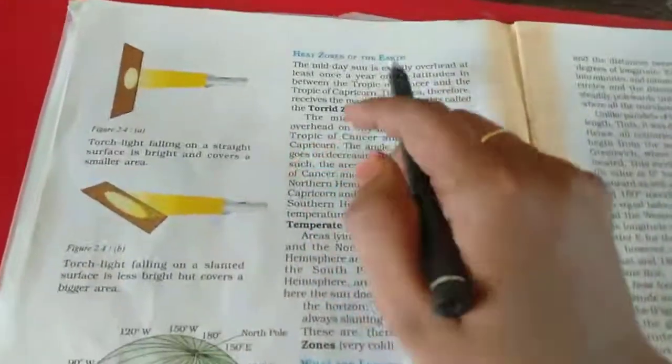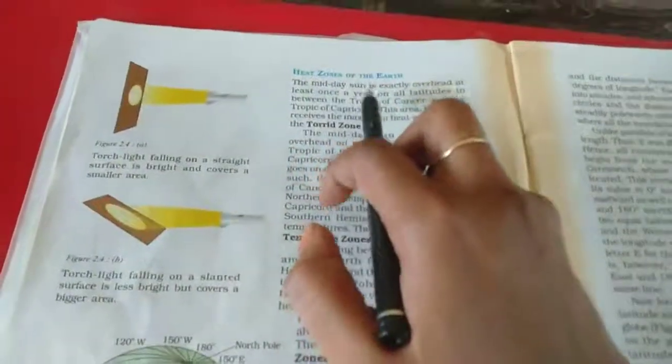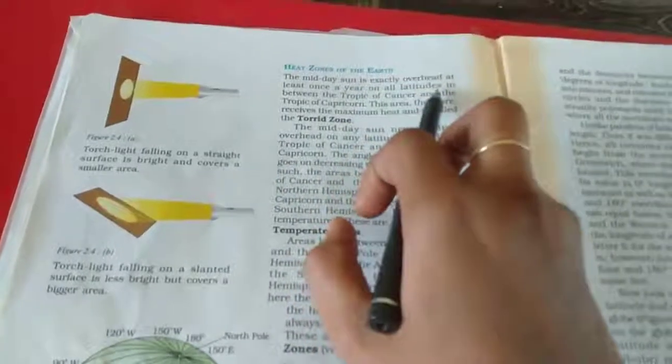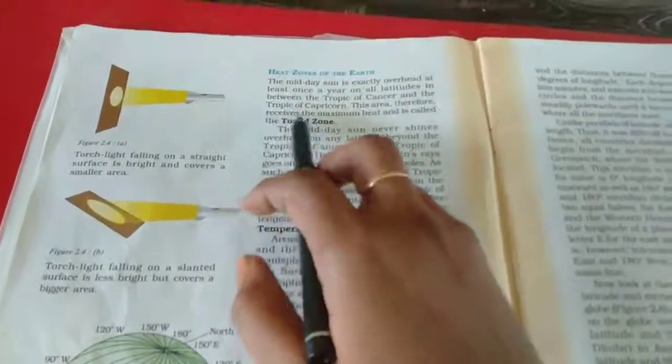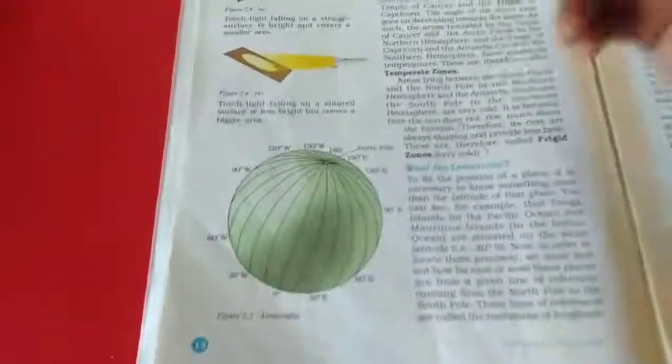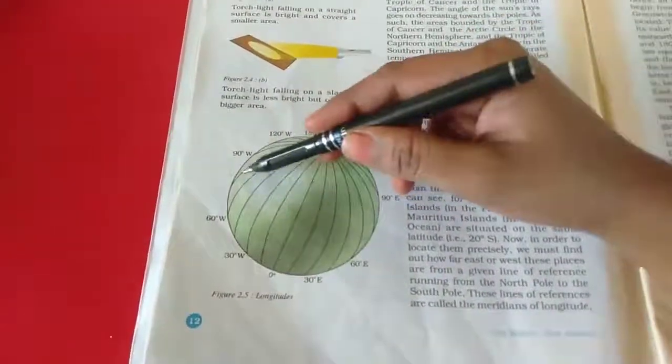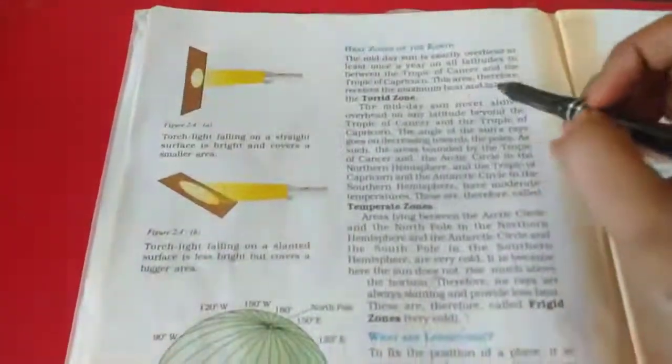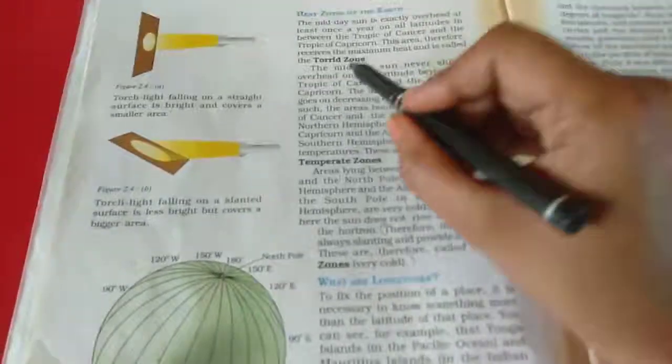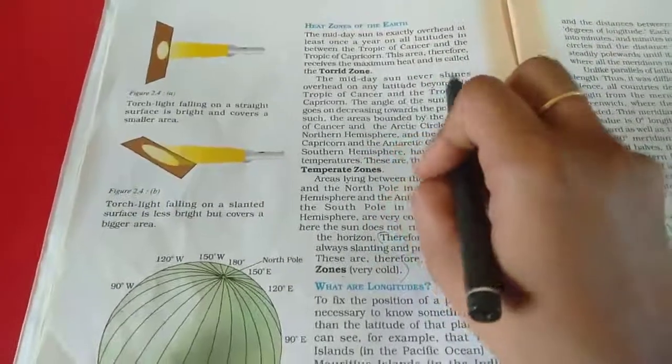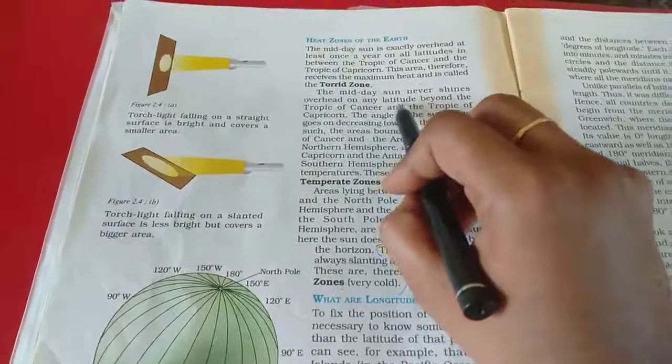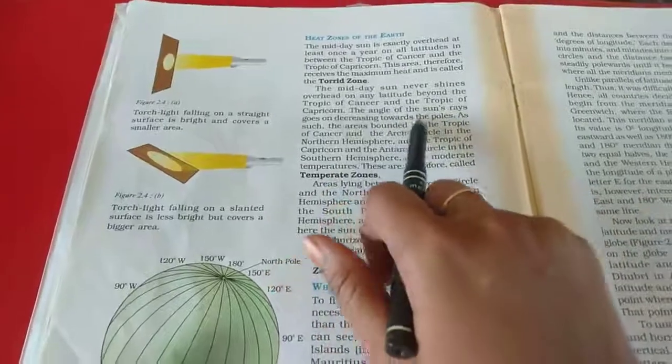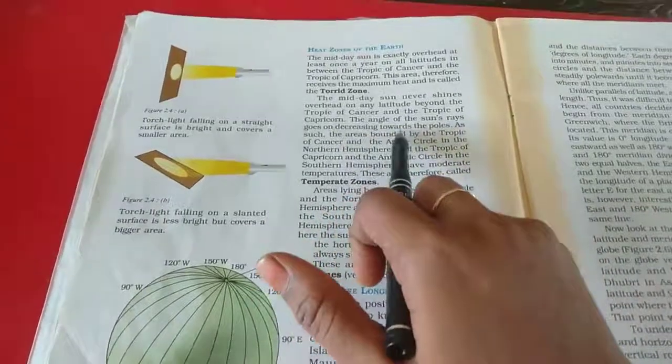Now we will see heat zones of the earth. The midday sun is exactly overhead at least once a year on all latitudes between the Tropic of Cancer and the Tropic of Capricorn. This is Tropic of Capricorn. This area receives the maximum heat and is called the Torrid zone. The midday sun never shines overhead on any latitude beyond the Tropic of Cancer and the Tropic of Capricorn.